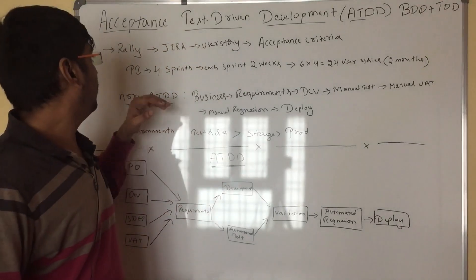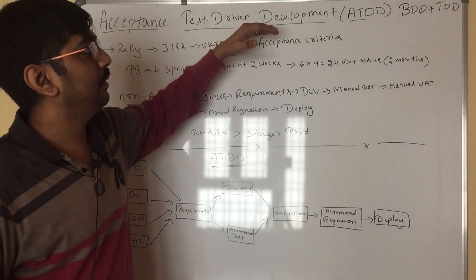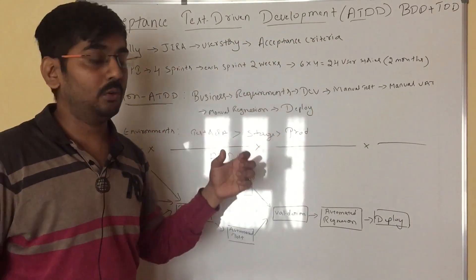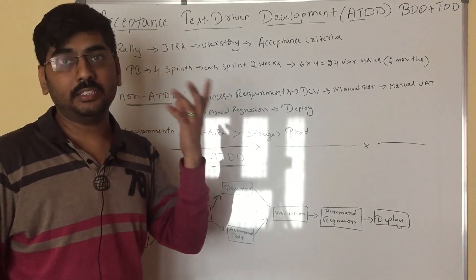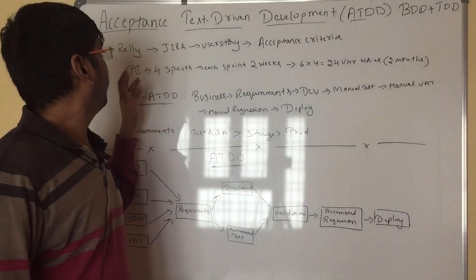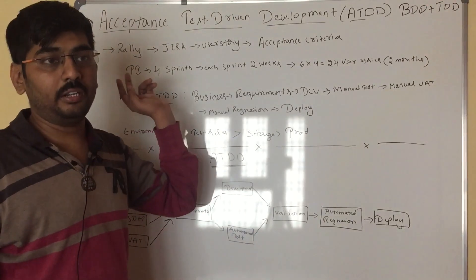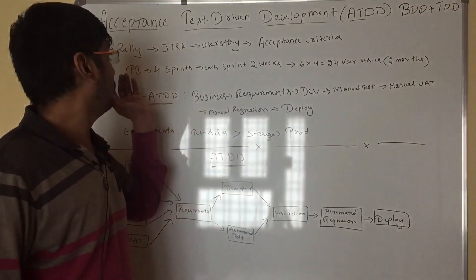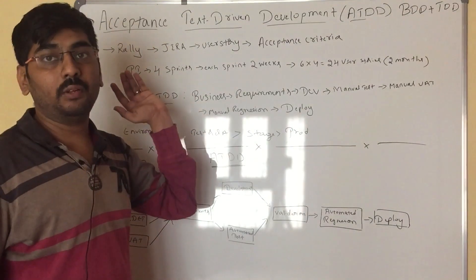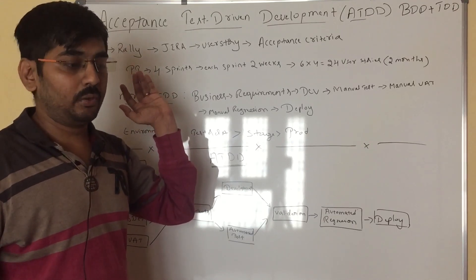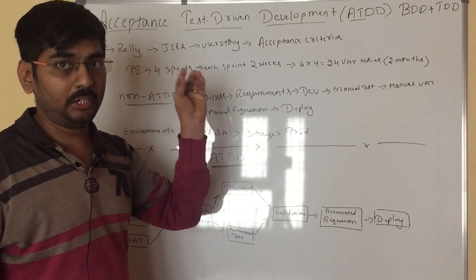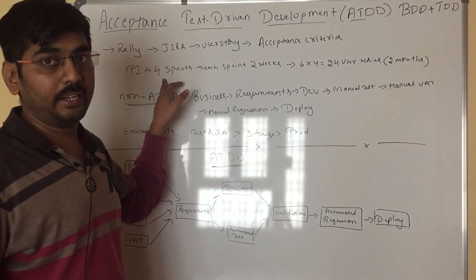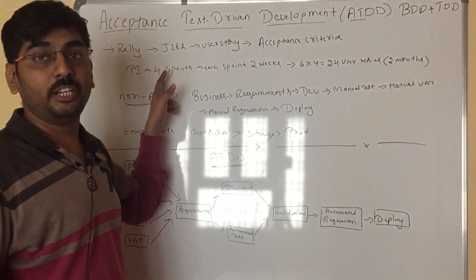Let's say why we are going for Acceptance Test Driven Development? We can do it manually also in Agile. But the thing is like for each PI, for one release, we have certain PIs. PI is nothing but a program increment. Each program increment at the starting, they will be discussing what user stories we are going to pull up for that particular PI. Based on the company, there will be differentiation. In our company, it is four sprints.